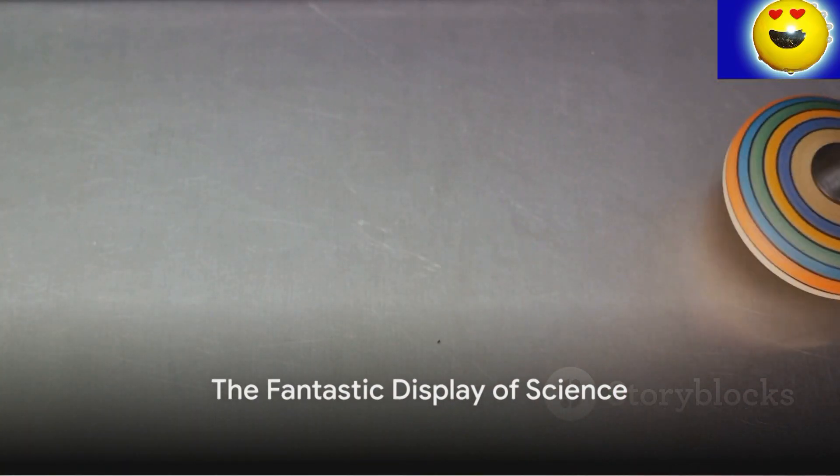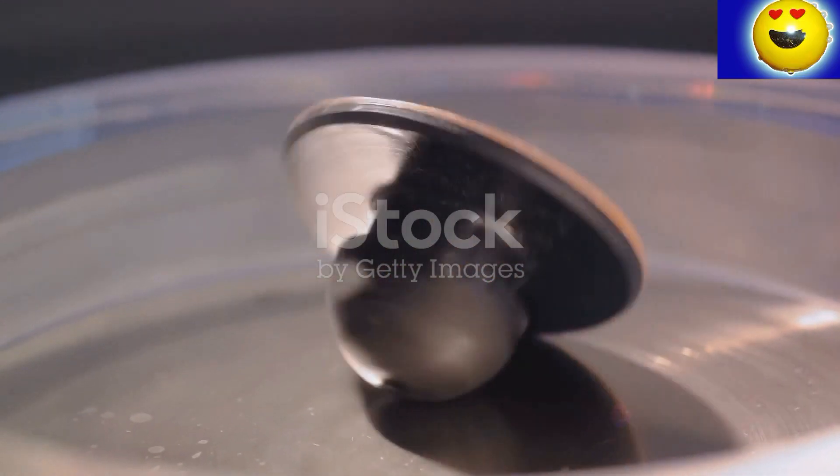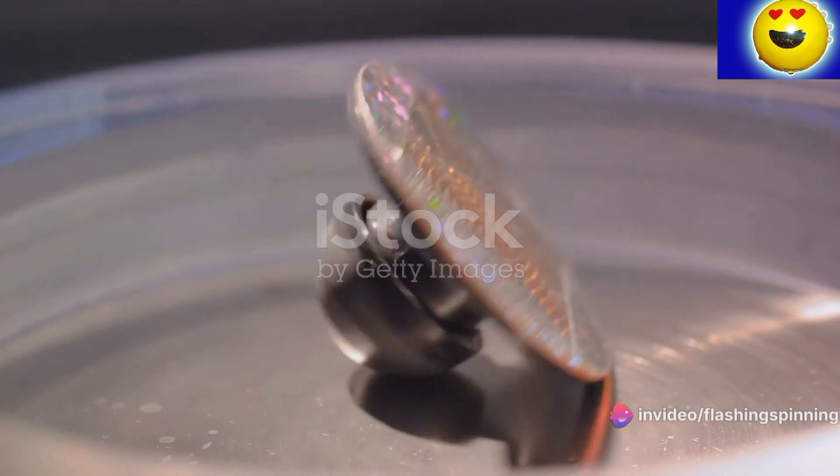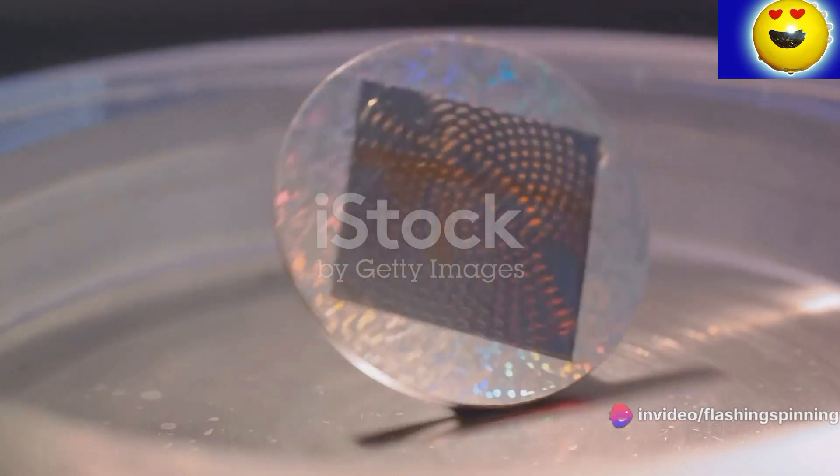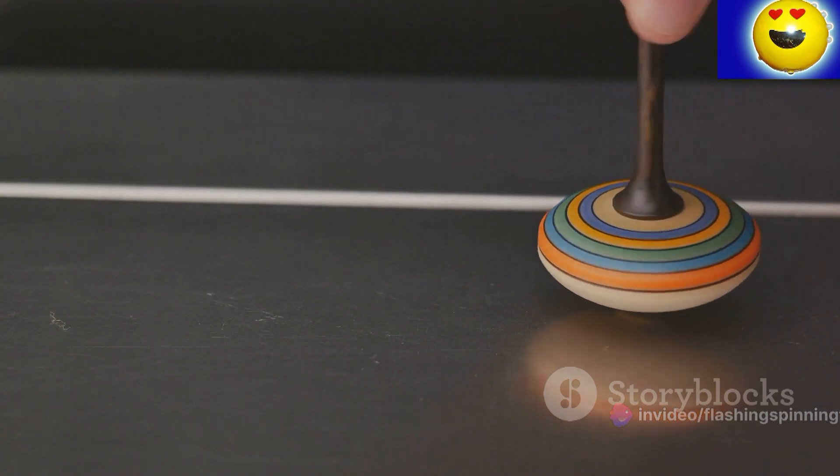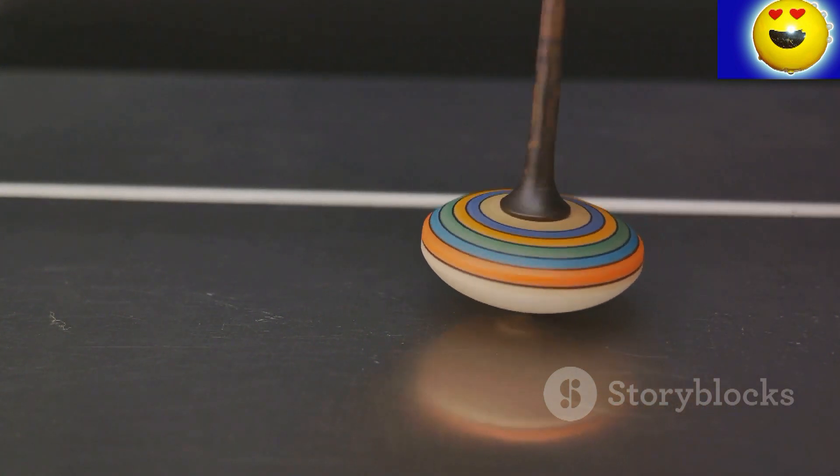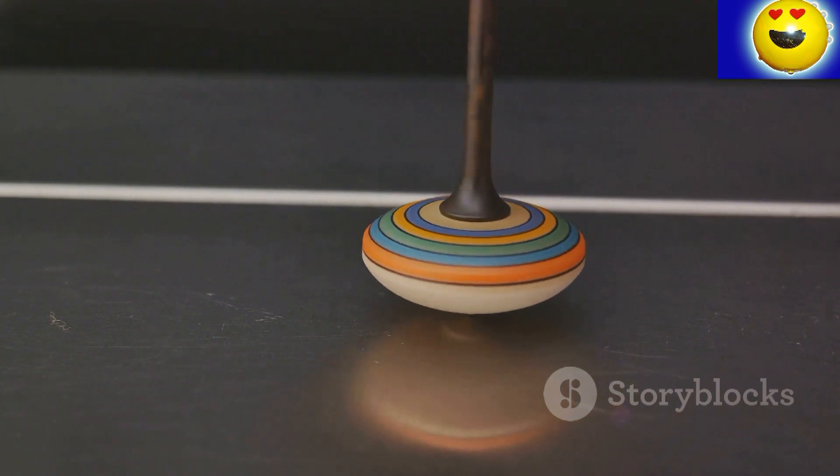To summarize, the spinning top toy's interaction is a fantastic display of science. When a top spins, it's given angular momentum, the force that resists changes to its path. As gravity tries to pull the top down, the top's angular momentum resists, resulting in gyroscopic stability that keeps the top upright.